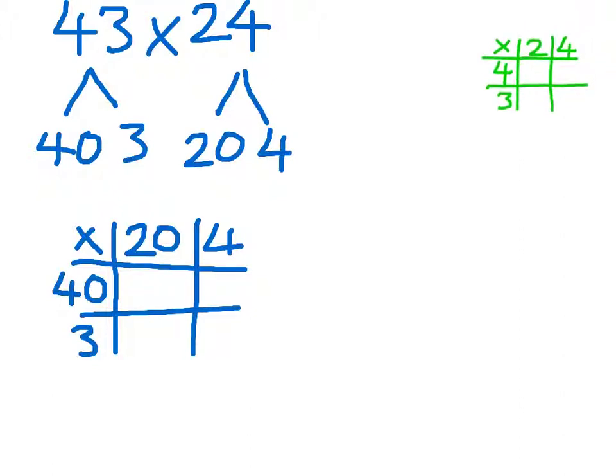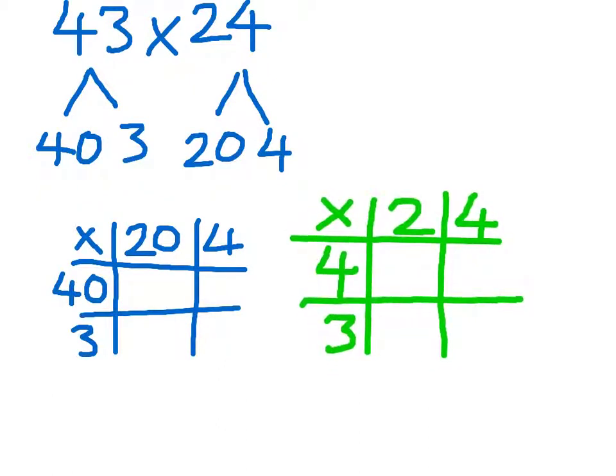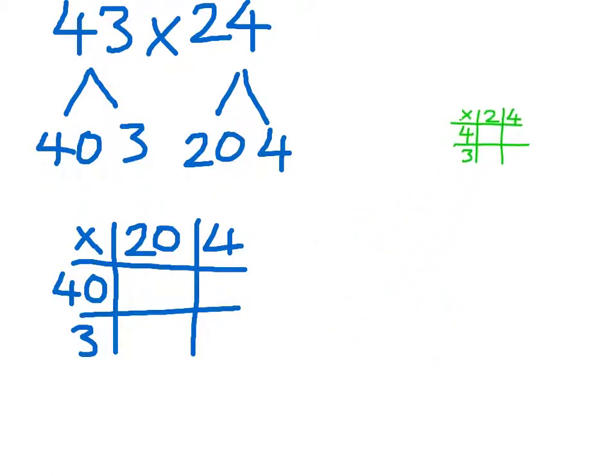It's very important you remember to partition properly. You can see with this grid, the 24 has been partitioned into 2 and 4. But we know that the value of 2 in 24 is 20. 43 has been partitioned into 4 and 3, but 4, its true value is 40. So this will be an incorrect calculation. So really watch that one.